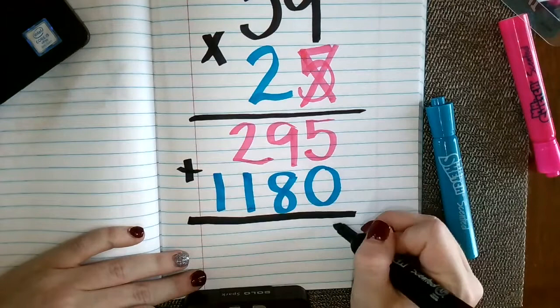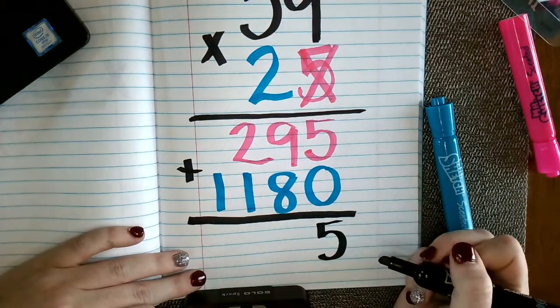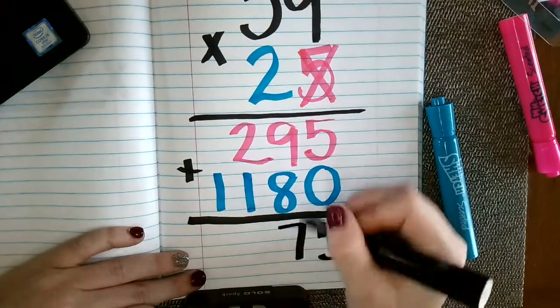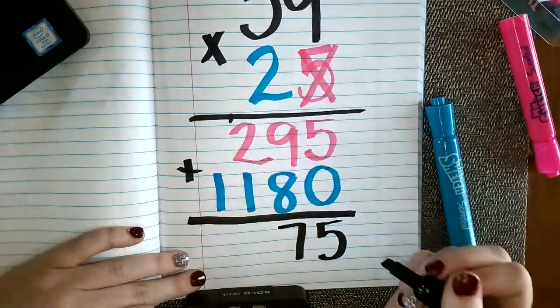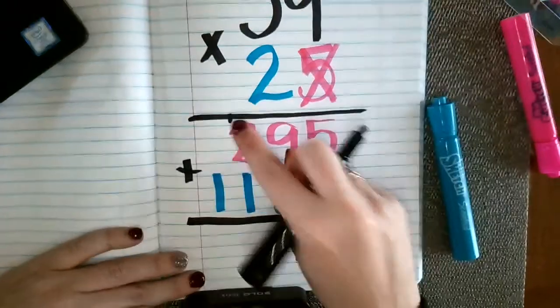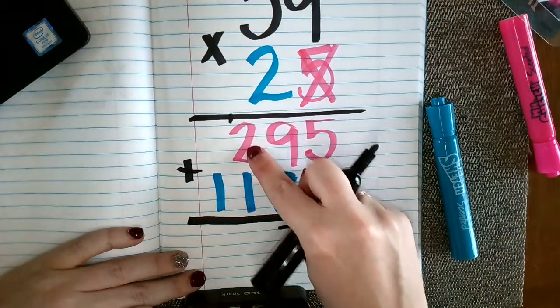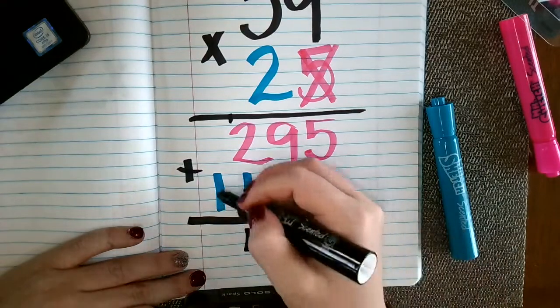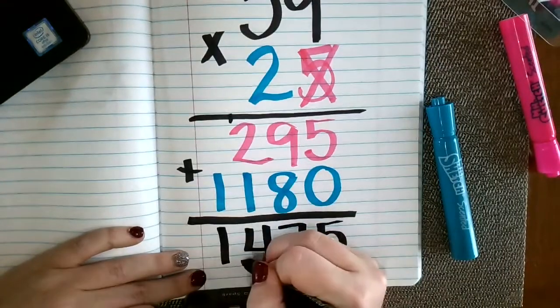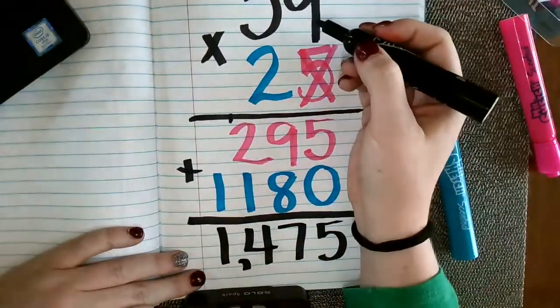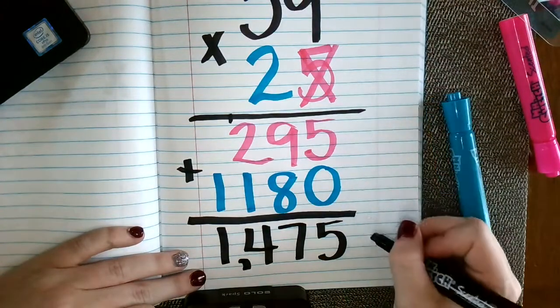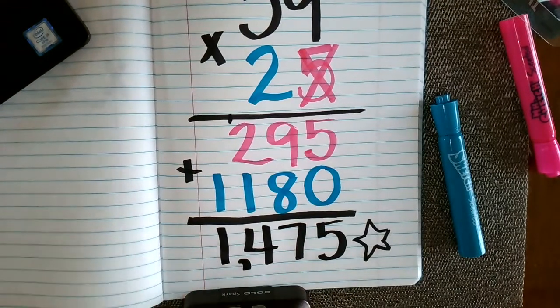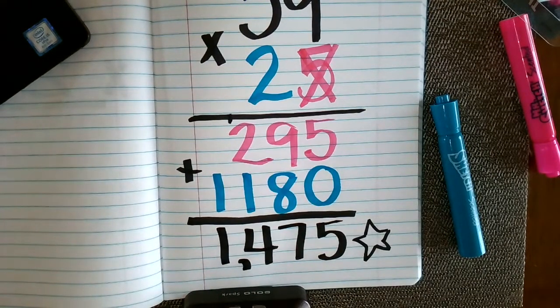So 5 plus 0 is 5. 9 plus 8 is 17. I carried that other place value. 1 plus 2 plus 1 is 4. And 1 plus nothing is 1. So now I know that 59 times 25 is 1,475. How'd you do? See you! Bye.